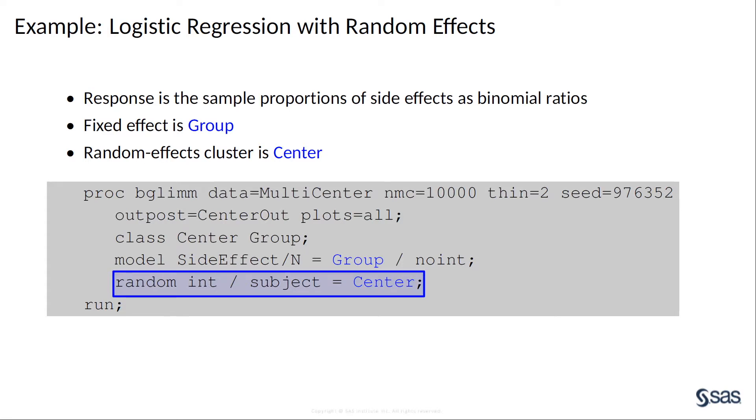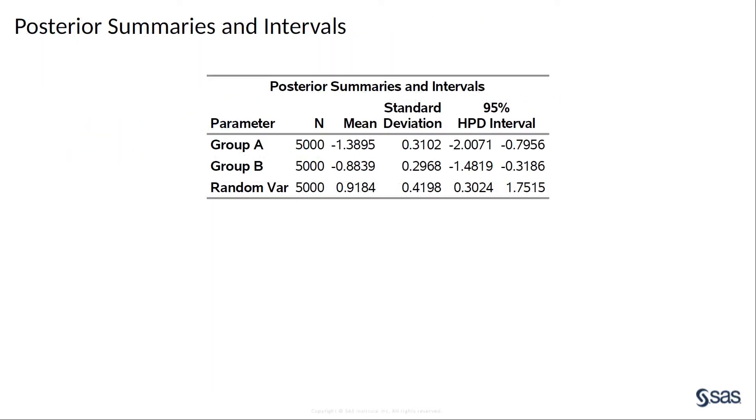If you run this program, PROC BGLIM will simulate from the posterior distribution and perform Bayesian analysis. The results are shown in a series of output tables.